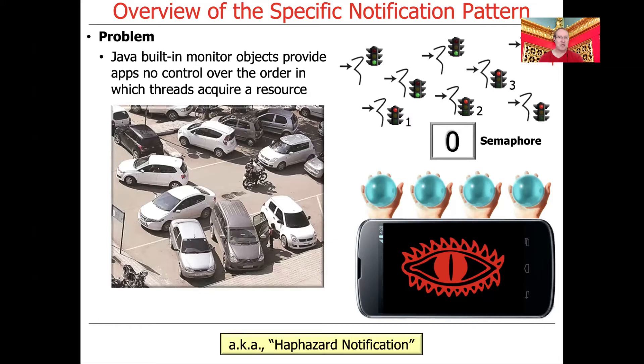This is what's referred to as haphazard notification. When you take a look at the specific notification pattern description, you'll see that one of the things that they talk about as the problem is haphazard notification, which just means you as the programmer have no control over which thread goes next.